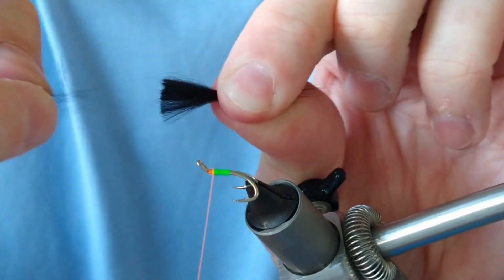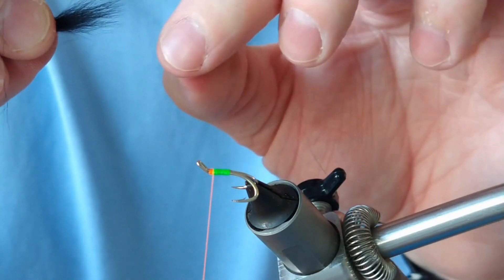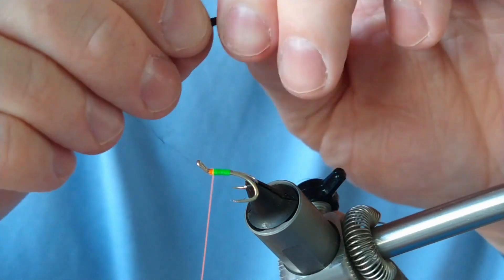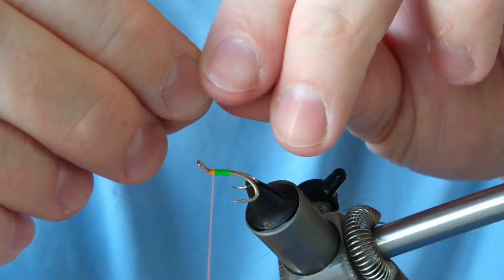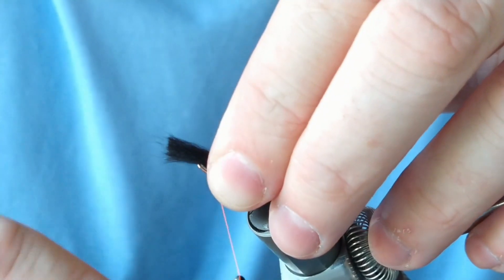As always, I'm going to just pull out the underfiber and then a few of the longer guard hairs. I want this a good bit past the hook.